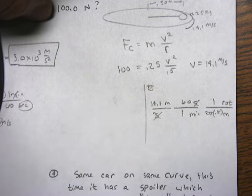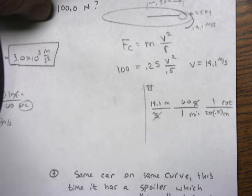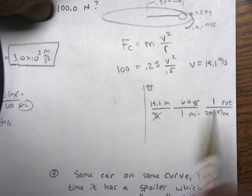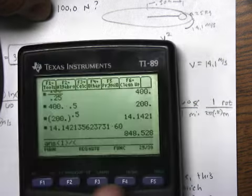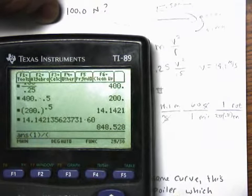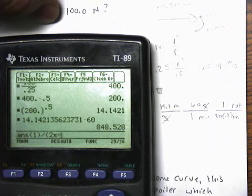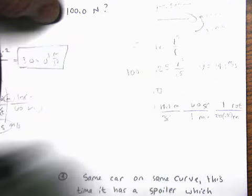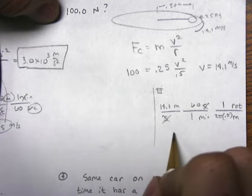You end up with, so 14.1 times 60, divided by, make sure you put it in parentheses if you're going to divide by all at once. So I'm doing this one divided by parentheses 2 pi times 0.5. So 270 is my rotations per minute.